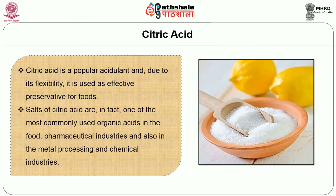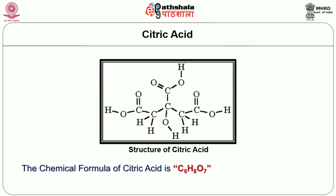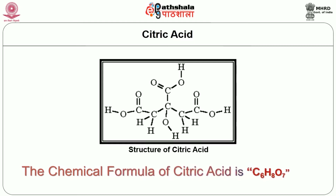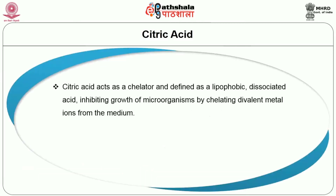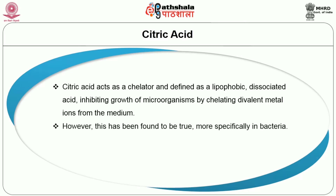Salts of citric acid are in fact one of the most commonly used organic acids in the food and pharmaceutical industries, and also in metal processing and chemical industries. The chemical formula of citric acid is C6H8O7. Citric acid acts as a chelator and is defined as a lipophobic dissociated acid inhibiting growth of microorganisms by chelating divalent metal ions from the medium. However, this has been found to be true more specifically in bacteria.